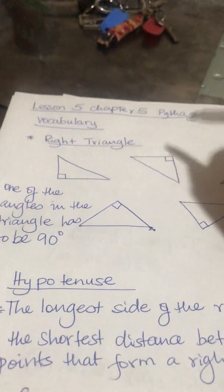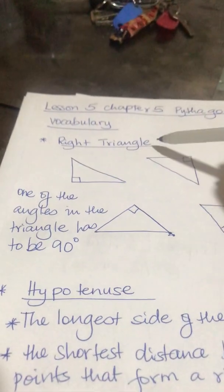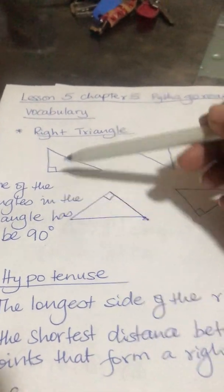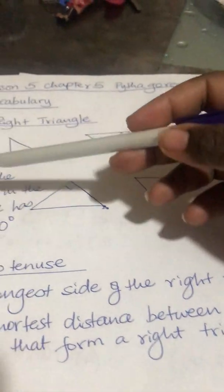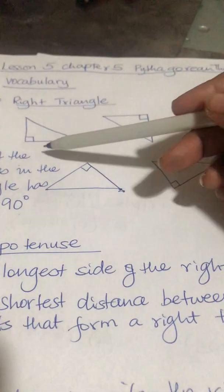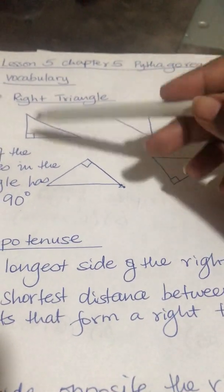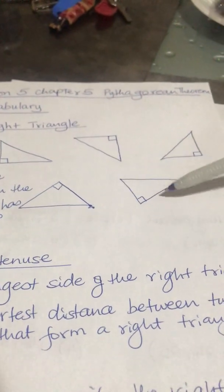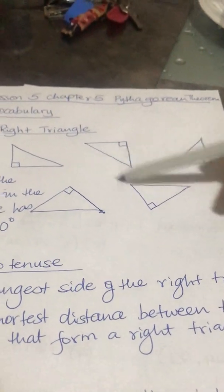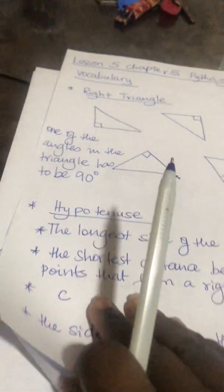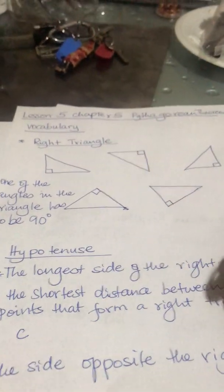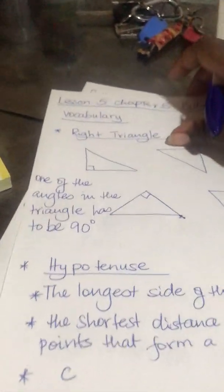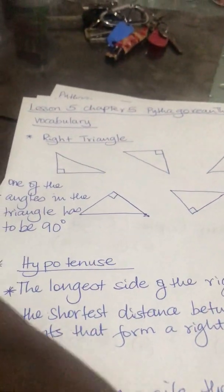Are we clear? Now, what is a right triangle? One of the angles in the triangle has to be 90 degrees. It can look exactly like this — face left, face right, upside down — it doesn't matter, as long as one of the angles inside is 90 degrees. Now the right triangle has three sides, and these three sides have specific names.